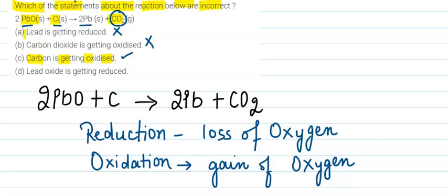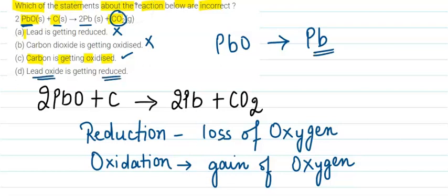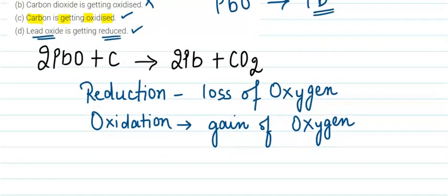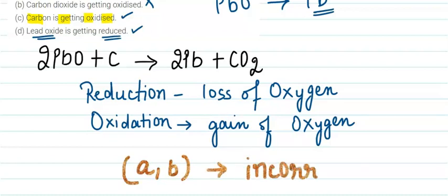The last statement says that lead oxide is getting reduced. In the reactant side we have lead oxide, and in the product side we have lead, so there is a loss of oxygen — lead oxide is getting reduced. This is also a correct statement. Therefore, the incorrect statements are A and B.